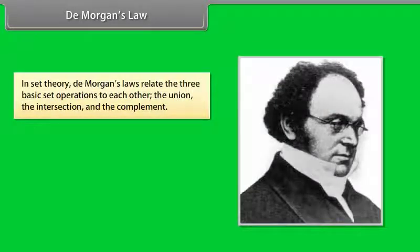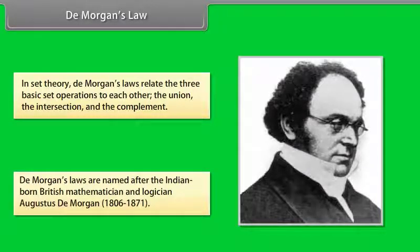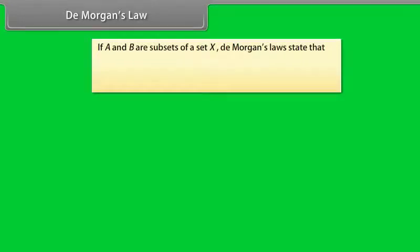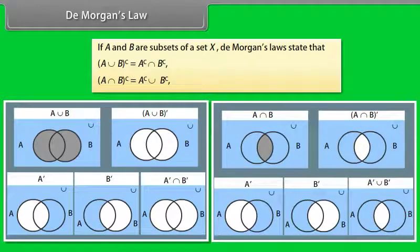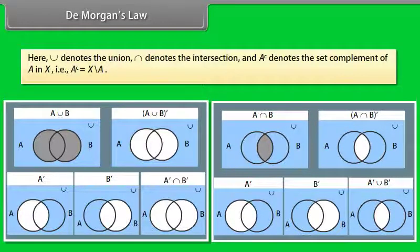De Morgan's Law. In set theory, De Morgan's Law relates the three basic set operations to each other: the union, the intersection, and the complement. De Morgan's Laws are named after the Indian-born British mathematician and logician, Augustus De Morgan. If A and B are subsets of a set X, De Morgan's Law states that: complement of (A union B) = complement of A intersection complement of B; and complement of (A intersection B) = complement of A union complement of B. Here, this denotes the union, this denotes the intersection, and this denotes the set complement of A in X.